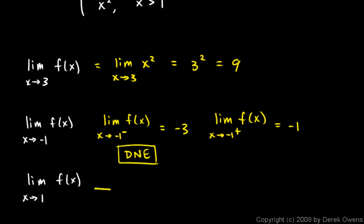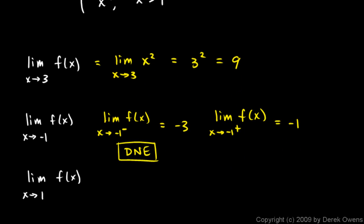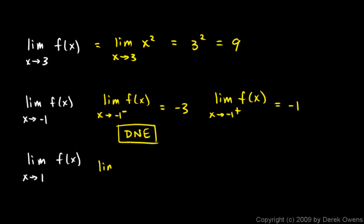And then the last part of the problem here. The limit as x approaches 1 of f of x. Well, look back at our function. If x is less than 1, it's x cubed. And if it's greater than 1, it's x squared. So we need to think about the left and right limits here also. So let's talk about the limit as x approaches 1 from the left. And when x is a little bit less than 1, then we're talking about x cubed. So this is just 1 cubed, which is 1.